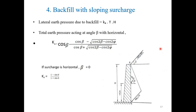Fourth case — backfill with sloping surcharge: In hilly areas, a sloping surcharge load acts on the retaining wall. The change here is in the methodology for finding Ka. Instead of the usual formula (1 − sin φ) / (1 + sin φ), we use the empirical formula: Ka = cos β × [cos β − √(cos²β − cos²φ)] / [cos β + √(cos²β − cos²φ)].